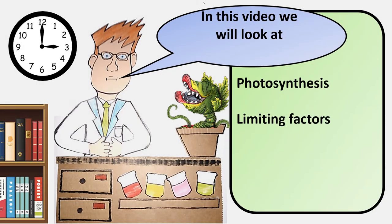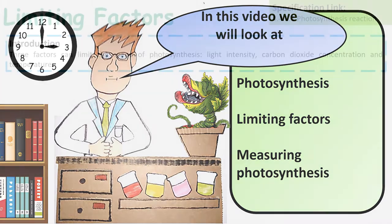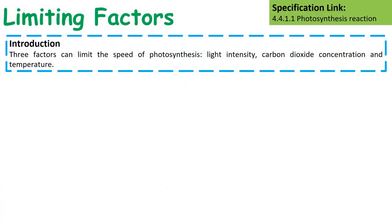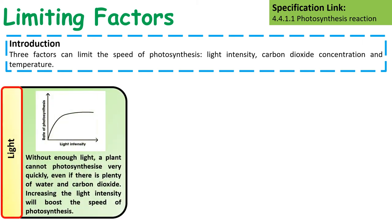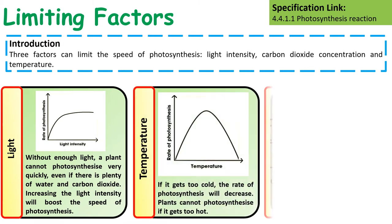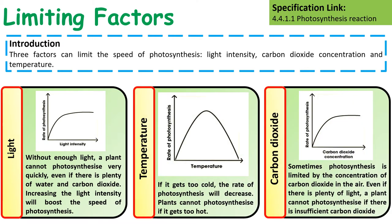Photosynthesis, limiting factors, and measuring photosynthesis. There are three factors that can limit the amount of photosynthesis taking place: light, temperature, and the concentration of carbon dioxide.